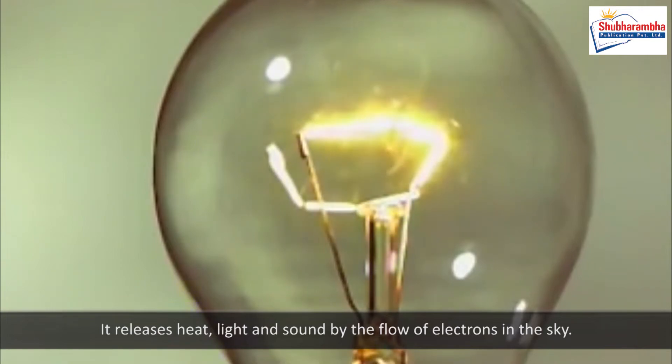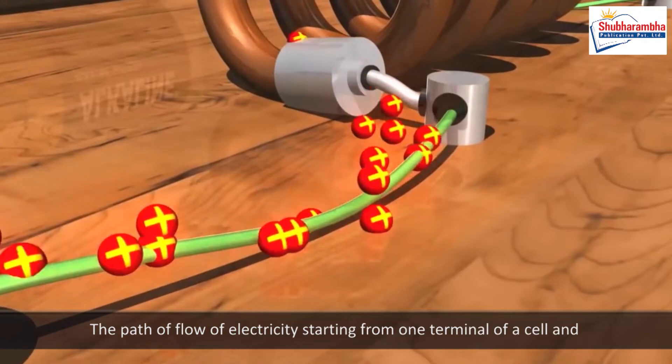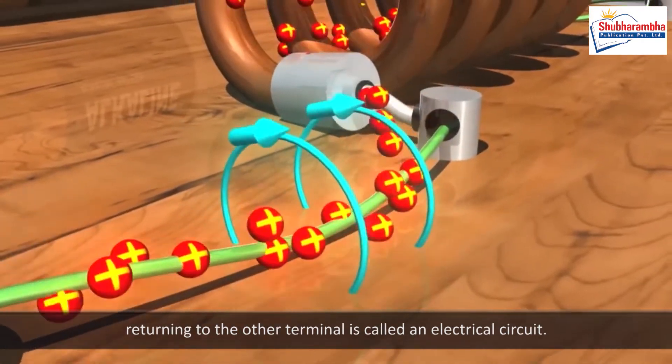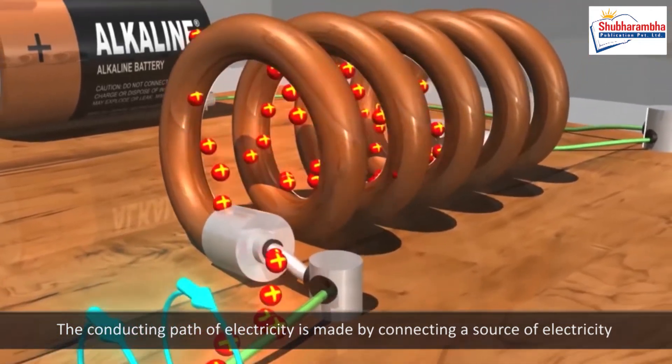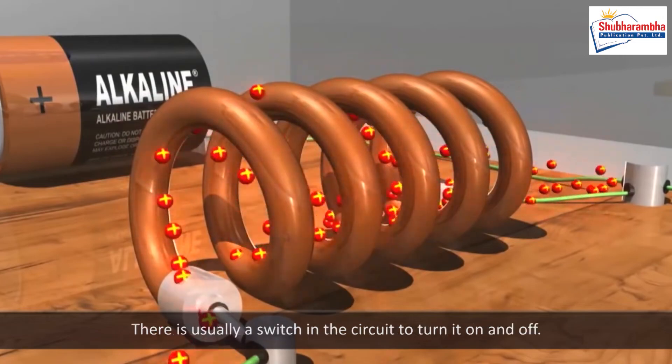Electric circuits: The path of flow of electricity starting from one terminal of a cell and returning to the other terminal is called an electrical circuit. The conducting path of electricity is made by connecting a source of electricity to an electrical appliance via conducting wires. There is usually a switch in the circuit to turn it on and off.